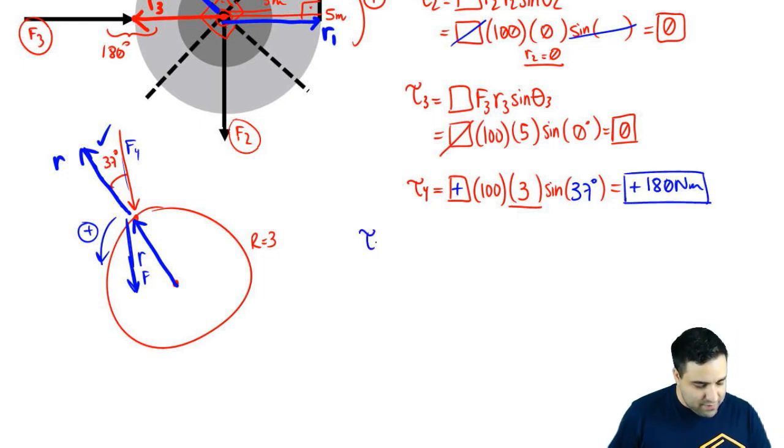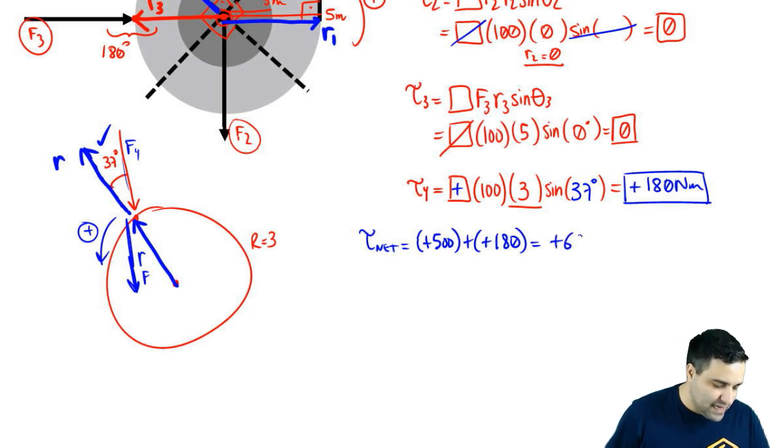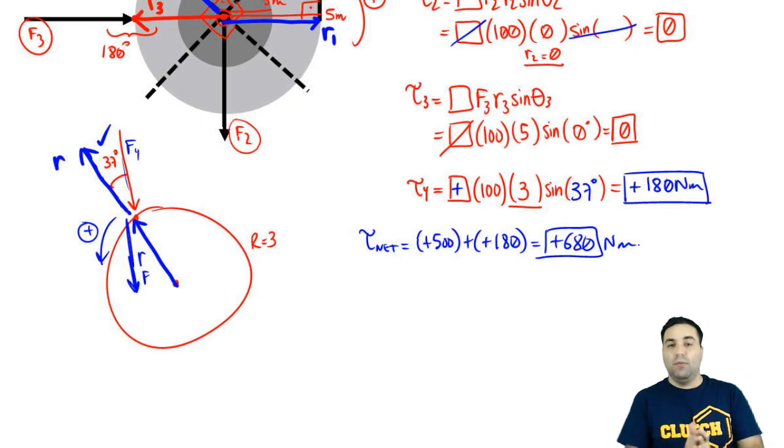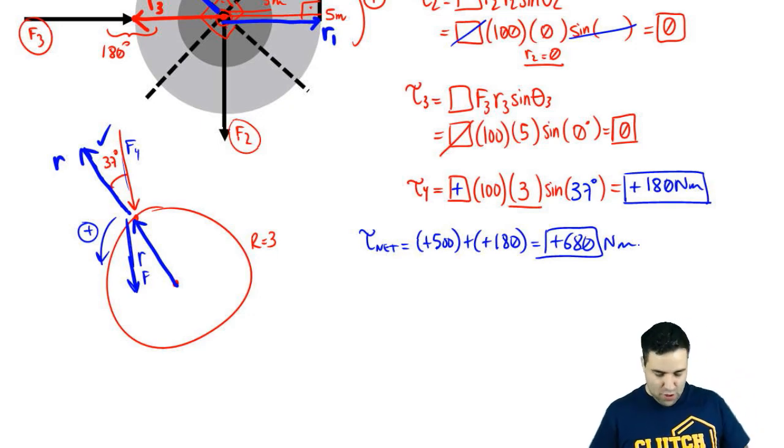And to find the net torque, we just add everything up. I got two of them that were zero. So it's just the positive 500 and the positive 180, which gives you positive 680 newton meter. Okay? That's it for this one. Hopefully it makes sense. Let me know if you have any questions and let's keep going.